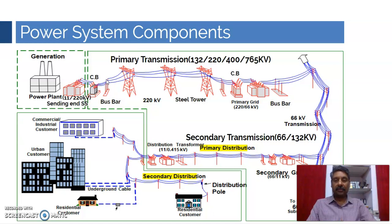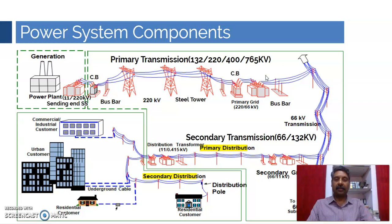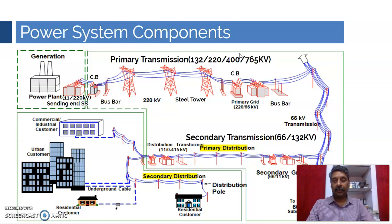From the substation we have circuit breakers, bus bars, and then that is connected to the transmission line. In the Indian scenario, transmission voltage levels start from 132 kV, 220 kV, 400 kV, and 765 kV — all AC transmission lines. In addition, we also have 500 kV HVDC as well as 800 kV HVDC, and we are now planning for 1200 kV AC at the transmission level. The network at 132 to 765 kV AC is called primary transmission.